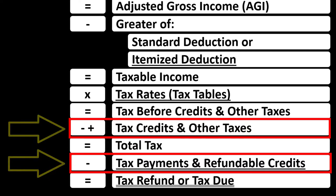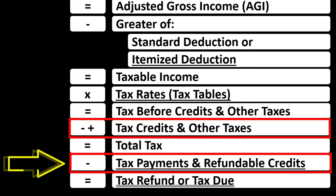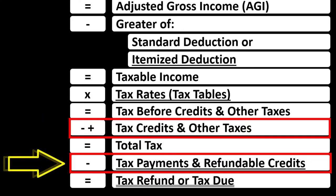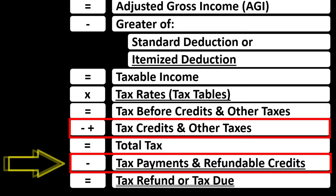Credits often fall into two categories: non-refundable and refundable. Non-refundable means it won't take the tax liability below zero. Refundable means it may — and if it takes tax liability below zero, you might get a so-called refund, which is more like a benefit program at that point.